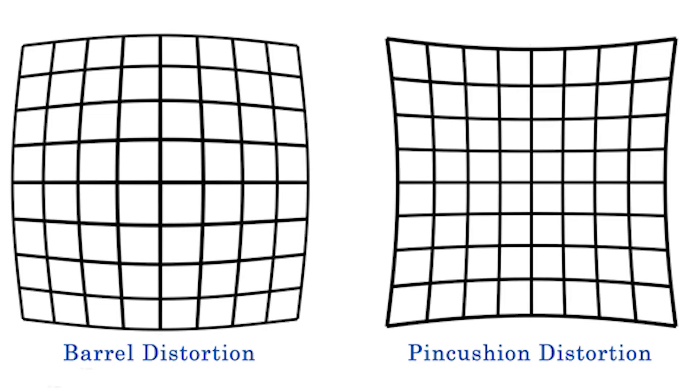I'm going to put up on the screen a picture of these two different types of distortion. On the right hand side we've got pin cushion distortion - you can clearly see the image is not square like it should be, it is pinched in at the top, bottom and sides. This is what the lenses in our VR headsets do to the image being displayed on the LCD or OLED panels.